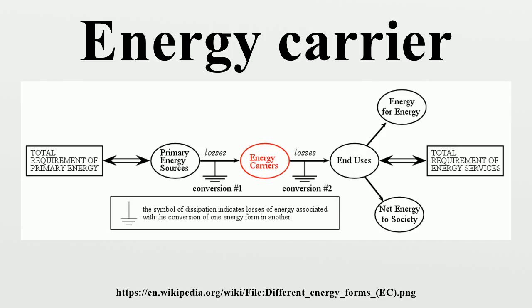ISO 13600 covers basic definitions and terms needed to define and describe energy systems in general, and energy supply and demand sectors in particular. ISO 13601 covers structures used to describe and analyze subsectors at the macro level of energy supply and demand. ISO 13602 facilitates the description and analysis of any technical energy systems.